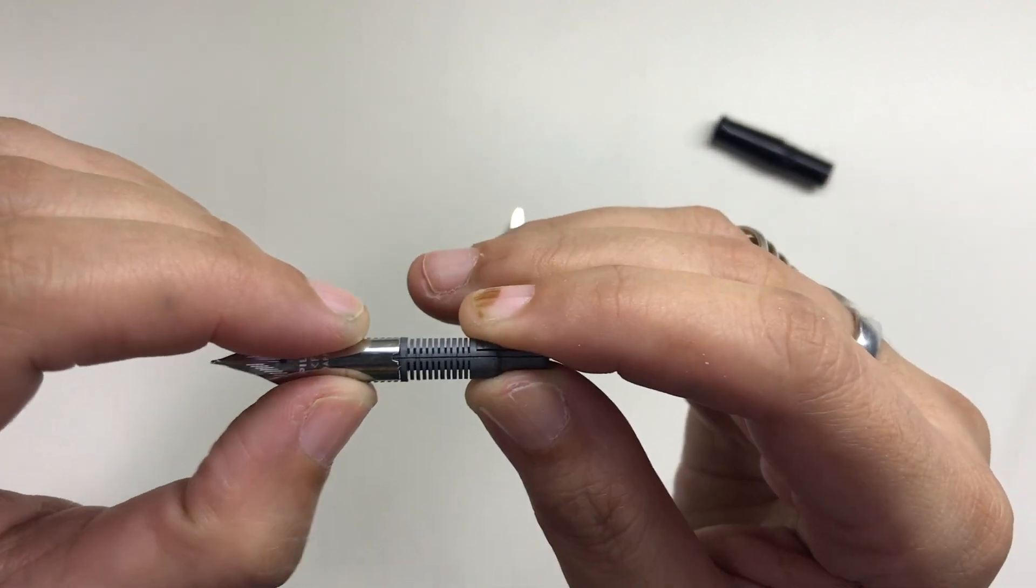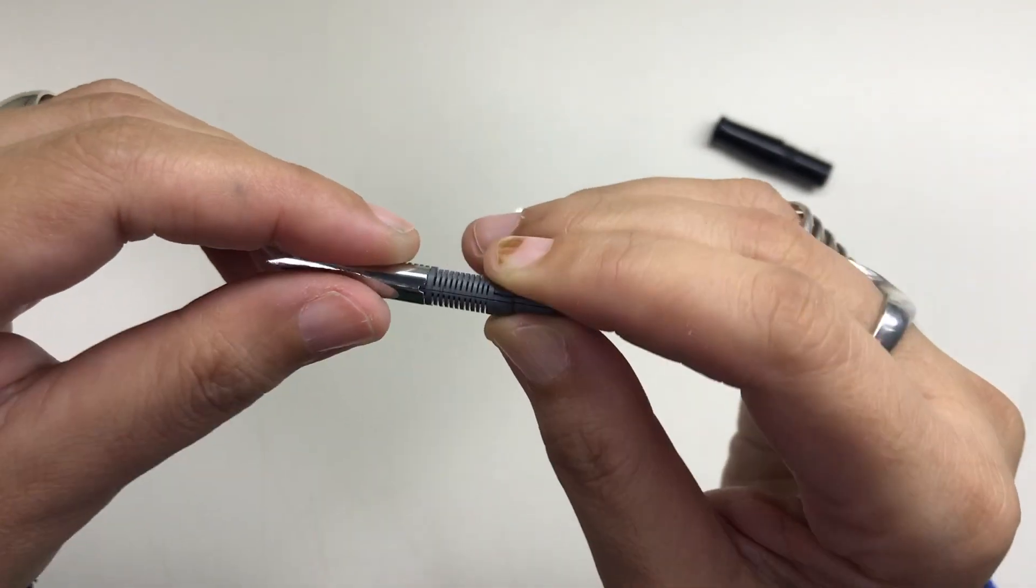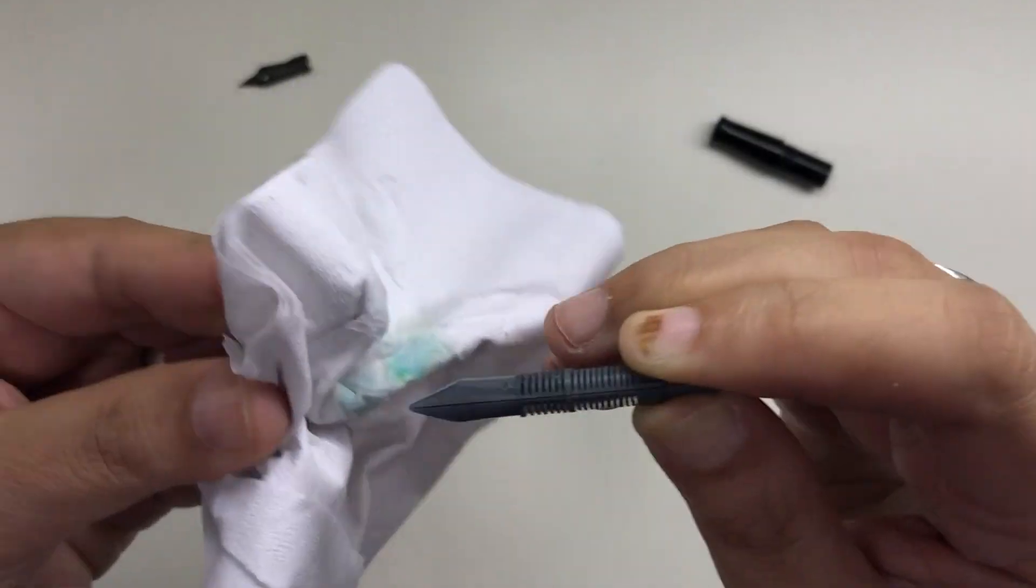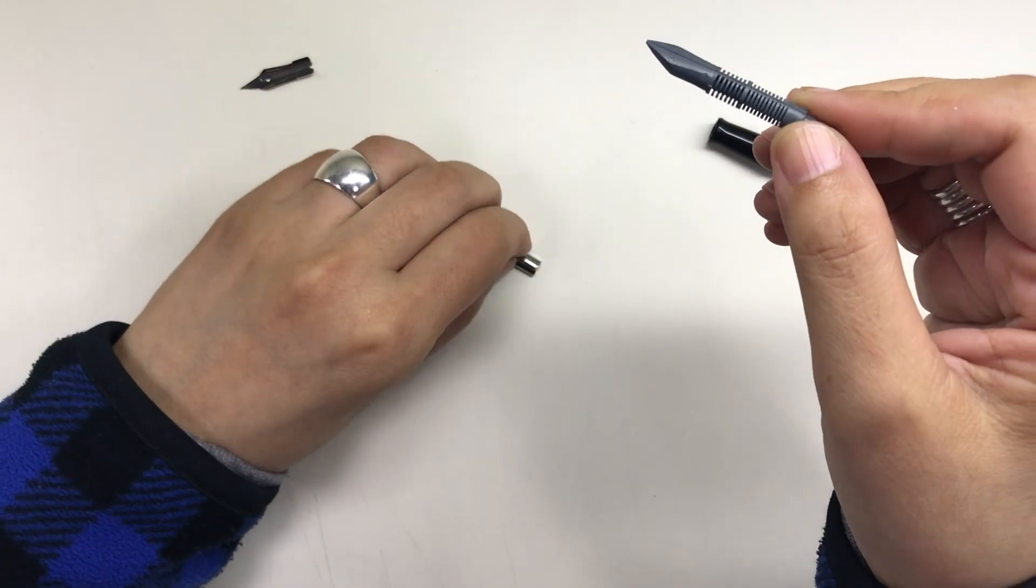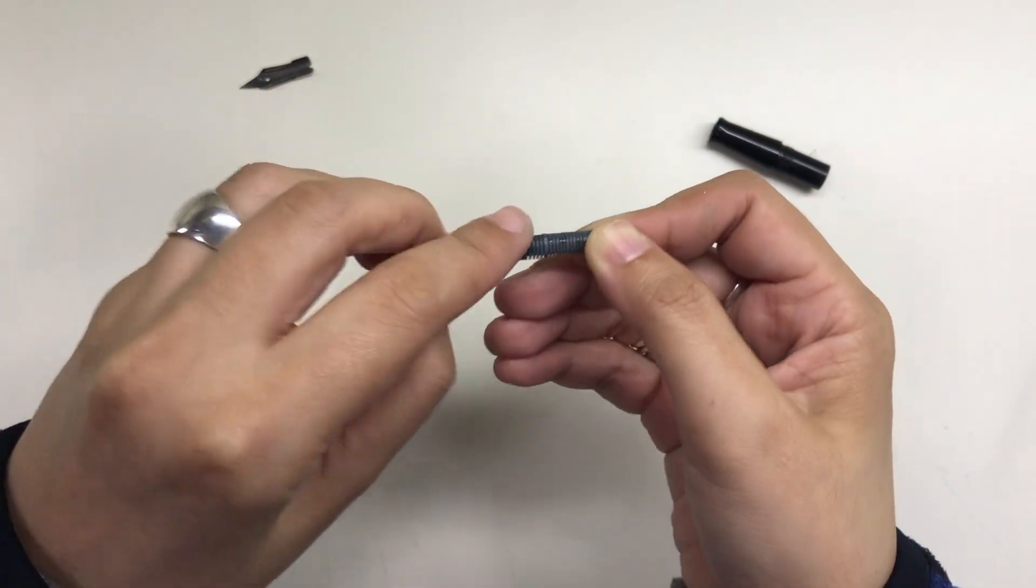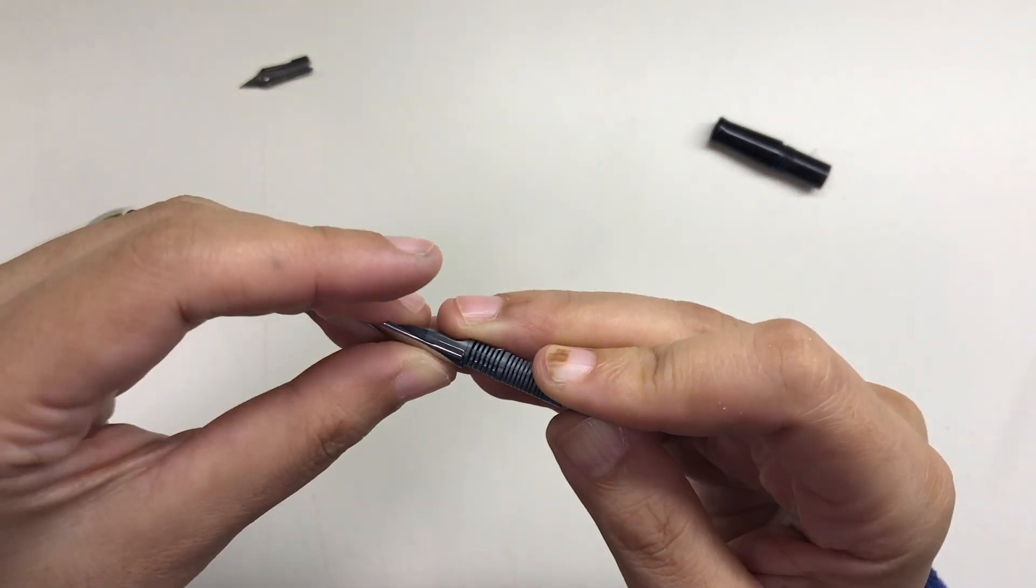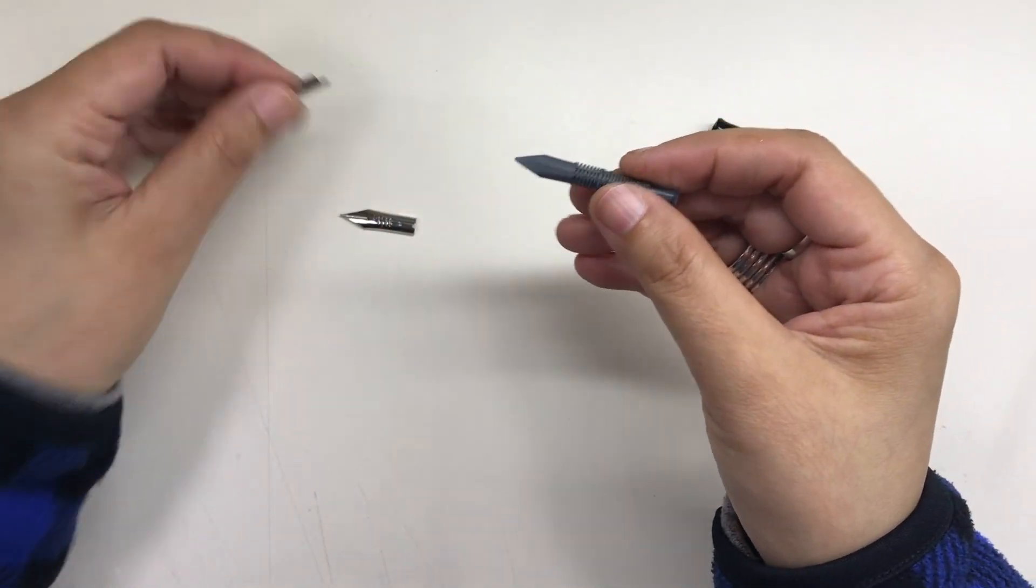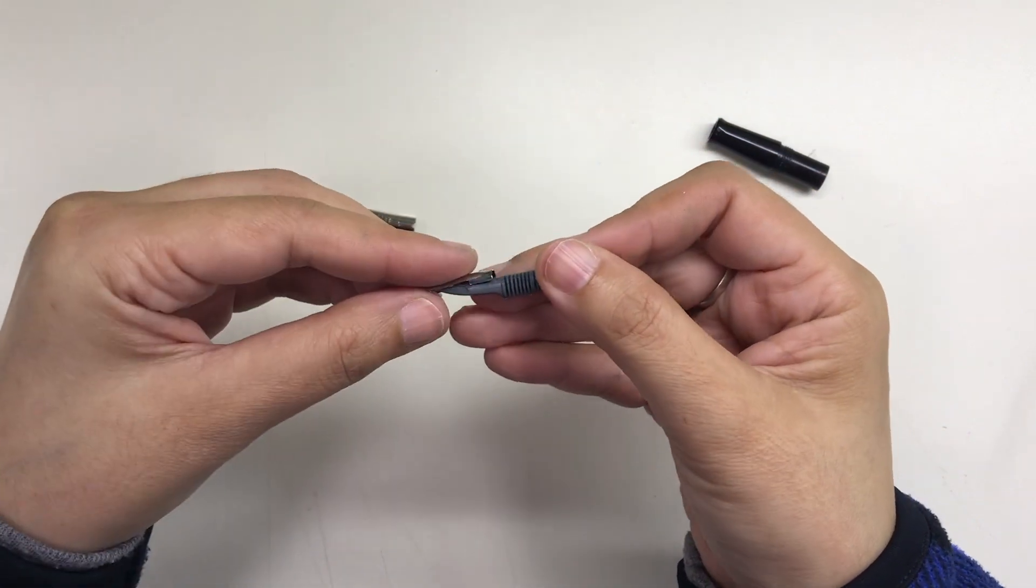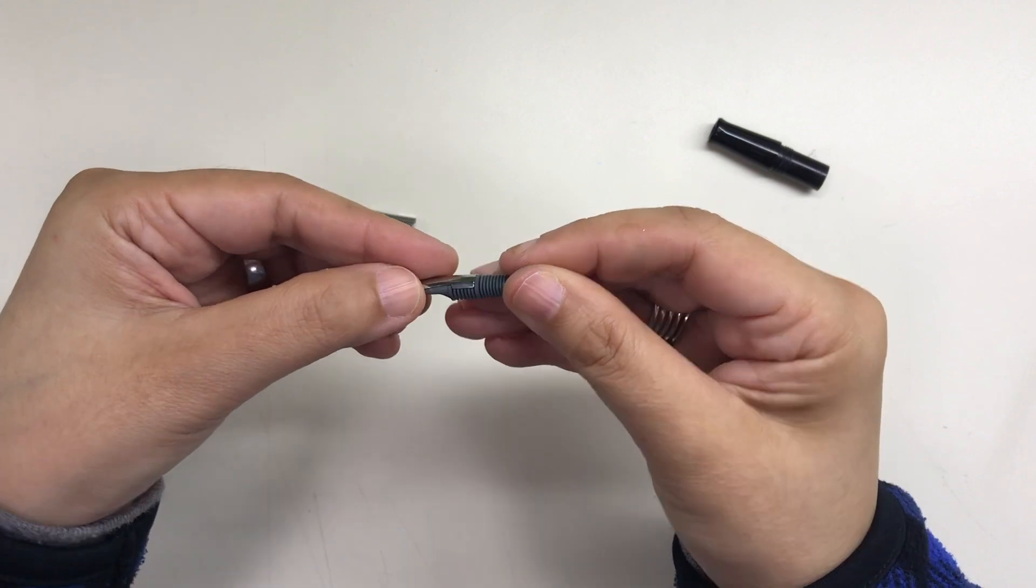And then I wiped the Metropolitan feed a little bit more, and then I took the Penmanship nib and placed it on the feed of the Metropolitan. And I just made sure to position it at the right location or at the right position that the original Metropolitan nib used to be.